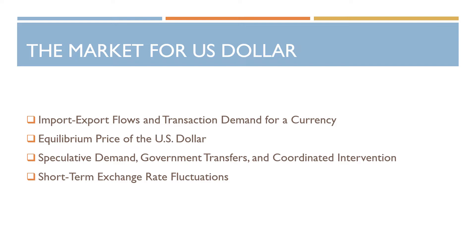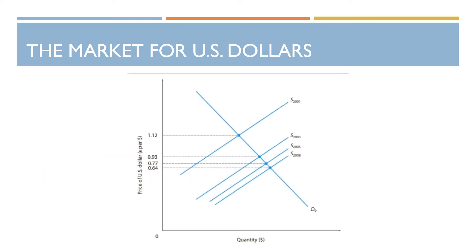There is also speculative demand and government transfer and coordinated interventions that we would like to talk about. Short-term exchange rate fluctuations can also be explained by the supply and demand model of the US dollar. The graph here basically demonstrates how the shift of the supply curve to the right — an increase of supply of the US dollar from the year 2001 all the way to 2008 — assuming the demand for US dollar currency is stable within this period, indicates that the exchange rate of the US dollar might vary in the global economy.